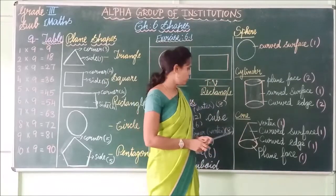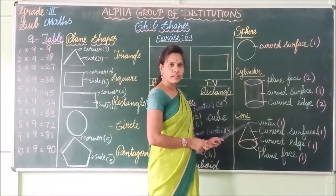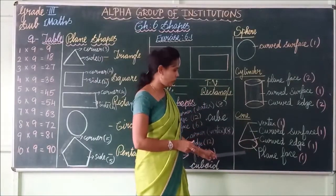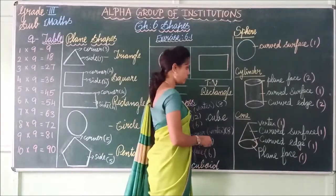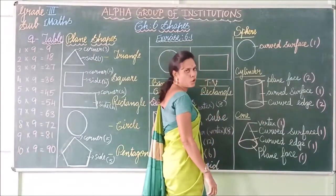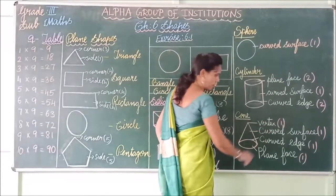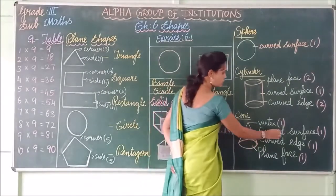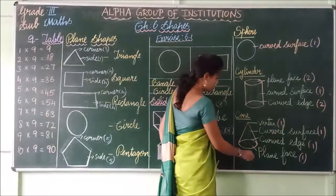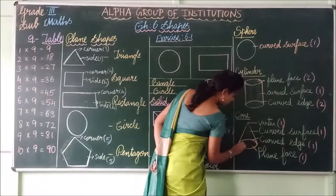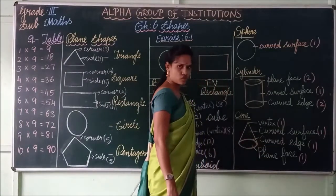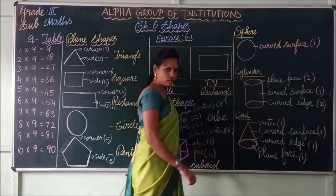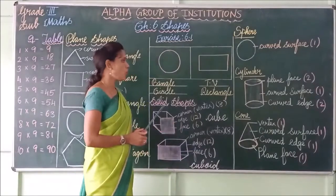You all have seen a cone — in an ice cream or a birthday cap you can find a cone shape. A cone has only one vertex, one curved surface, one curved edge, and one plain face.